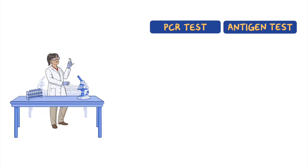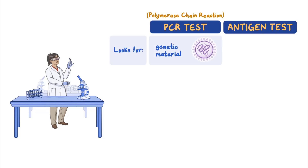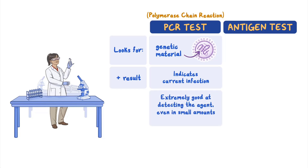A PCR test — PCR stands for polymerase chain reaction — looks for genetic material of an infectious agent. A positive PCR test indicates a current infection. This test is usually done in a laboratory and is extremely good at detecting the agent, even if it's present in small amounts.